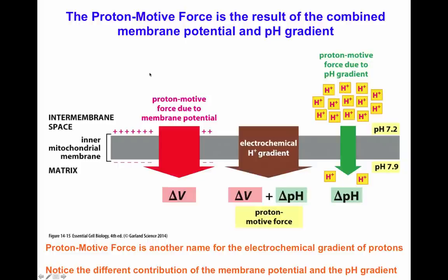The proton motive force, which is another name for the electrochemical gradient of protons, is a combination of the membrane potential as well as the pH gradient across the inner mitochondrial membrane. As indicated by this figure, the proton motive force involves a pH gradient that is the chemical component of the electrochemical gradient. There is a pH of 7.2 in the intermembrane space and a greater pH of 7.9 in the matrix of the mitochondria, illustrated here by the green arrow.